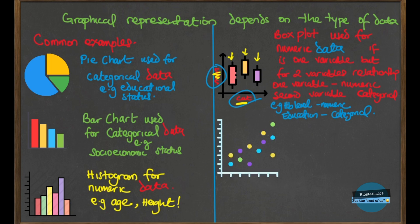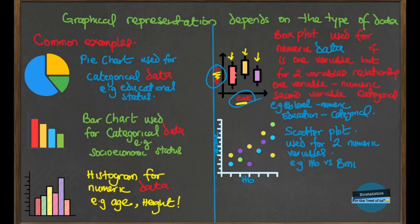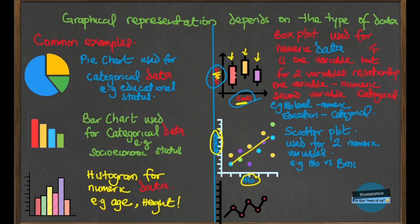Next is the scatter plot, which is useful for checking the relationship between two numeric variables. When you hear scatter plot, we're talking about two numeric variables. An example is hemoglobin level and BMI — one variable takes one axis and the other variable takes the other axis. The last one to highlight is the line graph, which is useful for monitoring the changes of a numeric variable over time. An example is the number of cases of neonatal tetanus from 1990 to 2022.